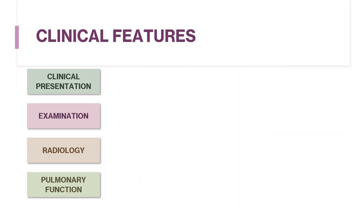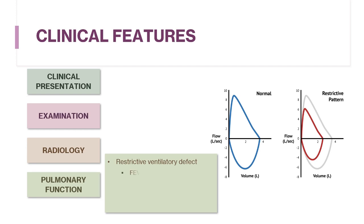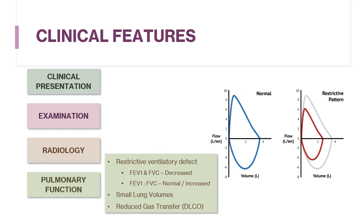Proceeding to pulmonary function tests: all these diseases share the common finding of a restrictive ventilatory defect on spirometry, where both forced vital capacity and forced expiratory volume in one second are reduced, and the ratio of FEV1 to FVC is either normal or increased. Furthermore, lung function tests show the presence of small lung volumes and reduced gas transfer.